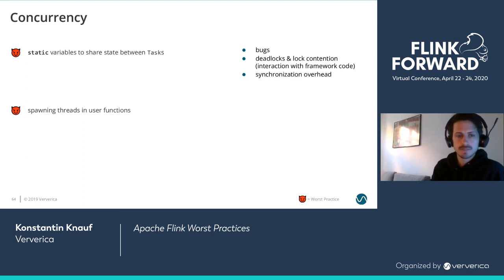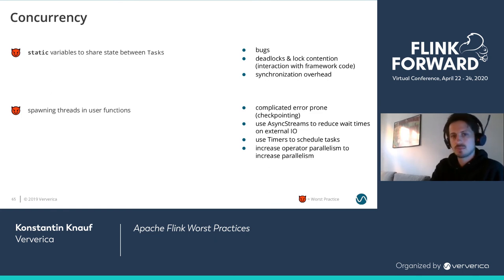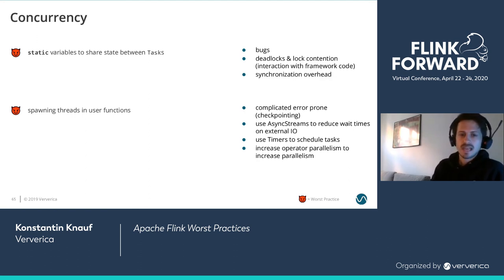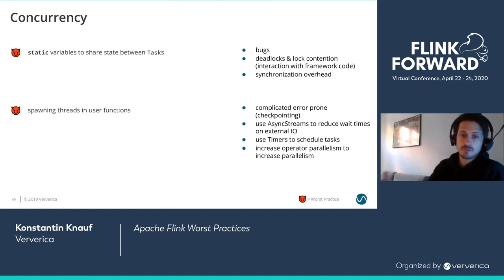Another anti-pattern is spawning threads in your user functions. There's just no need to do that, and it's error-prone because you circumvent Flink's mechanism of ensuring checkpointing and record processing don't interfere with each other. If you want to spawn a thread to reduce wait times, just use async I/O — there's a utility for that in the Flink API. If you want to schedule or delay something, use timers. If you just want to increase parallelism, increase the parallelism.